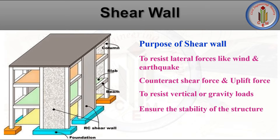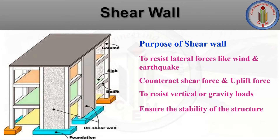The main purpose of a shear wall is to resist lateral forces like wind and earthquake acting in the plane of the wall, and to counteract shear force and uplift force. It also resists vertical and gravity loads. As seen in the image, the shear wall resists lateral forces, counteracts shear and uplift forces, resists gravity loads, and enhances the overall stability of the structure.